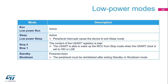The USART peripheral is active in Run, Sleep, and Low Power modes. USART interrupts cause the device to exit Sleep and Low Power Sleep modes. The USART is able to wake up the MCU from Stop 0 and Stop 1 modes when the USART clock is set to HSI or LSE. USART reception is functional in stop mode and generates a wake-up interrupt on start, address match, or received frame event. In Standby and Shutdown modes, the peripheral is powered down and must be re-initialised after exiting those modes.